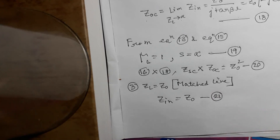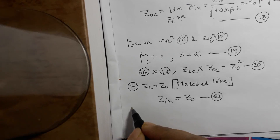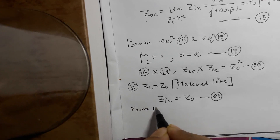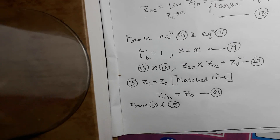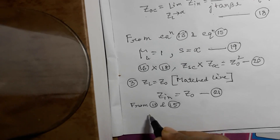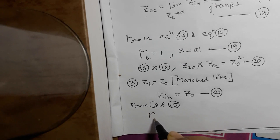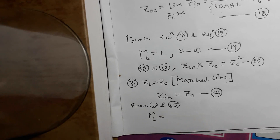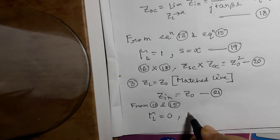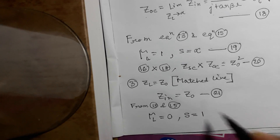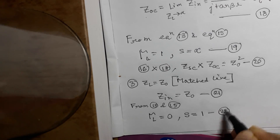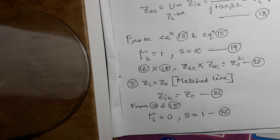From equation number 13 and 15, for the matched line case, the reflection coefficient ΓL will be equal to 0, and the standing wave ratio S will be equal to 1. This is equation number 22.